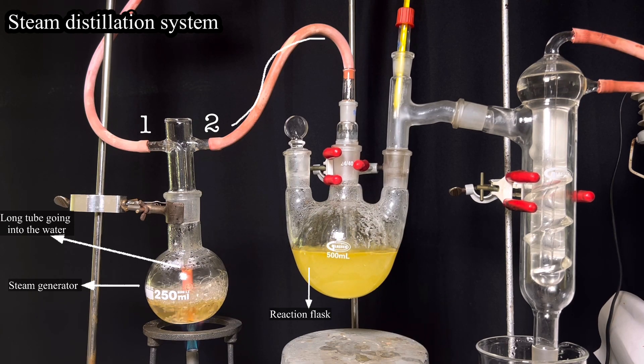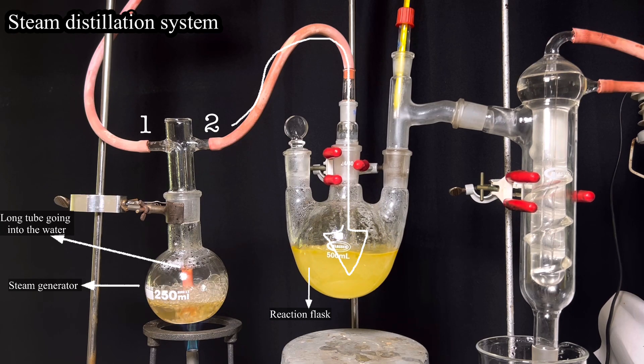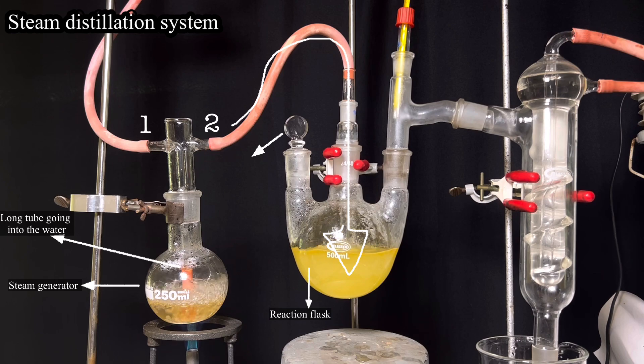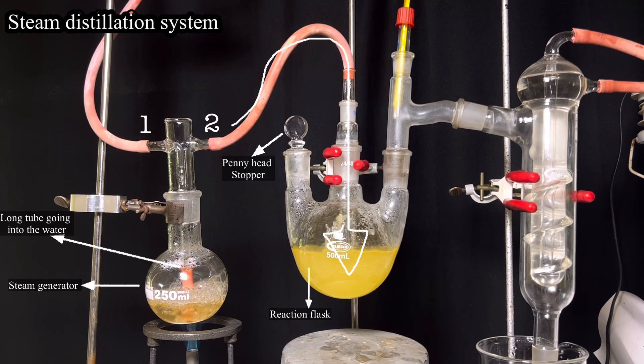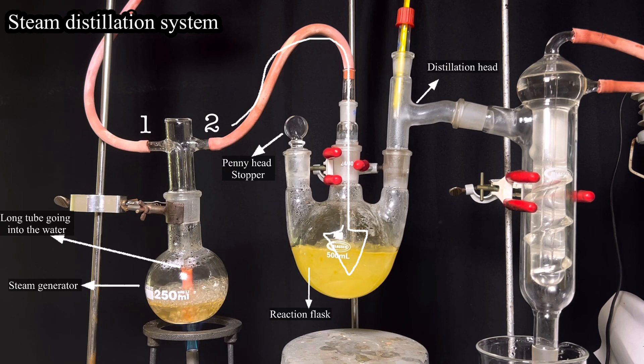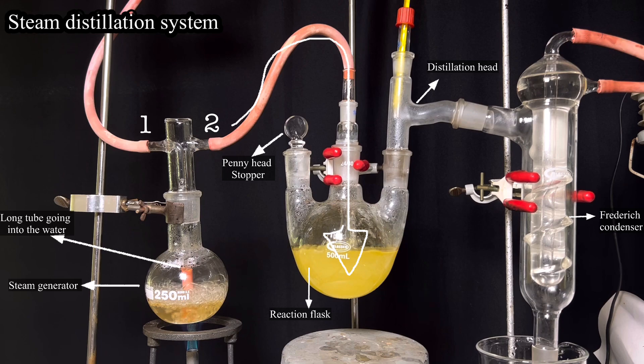Steam travels through the tubing to the reaction flask through its center neck. The center neck has a long tubing inside which goes into the contents of the flask. The left side neck was closed using a solid penny head stopper. On the right side, we have the distillation head and a thermometer. A Friedrichs condenser was also connected to the distillation head.